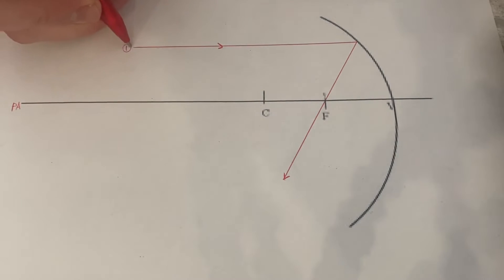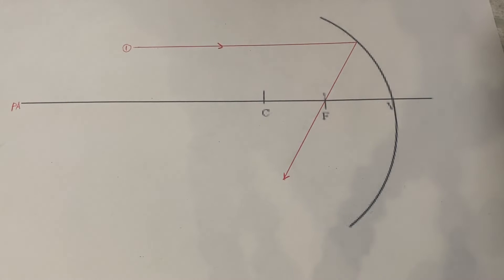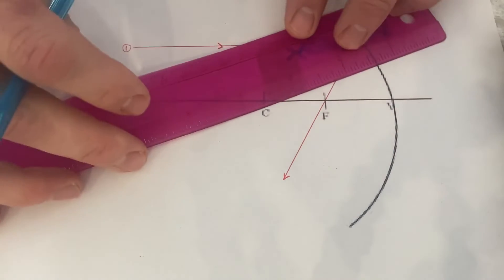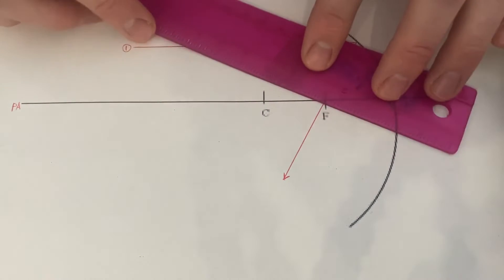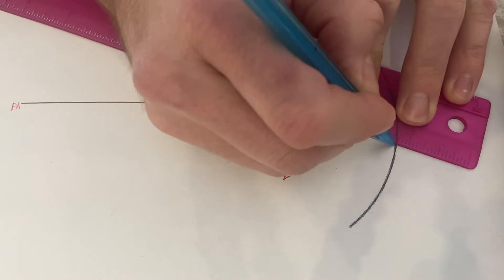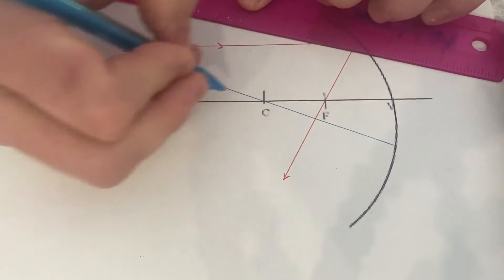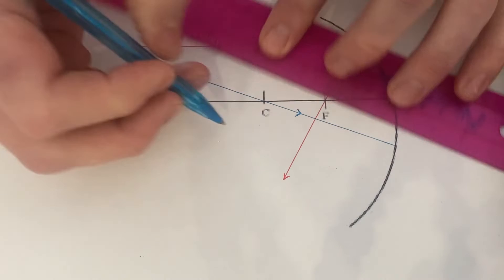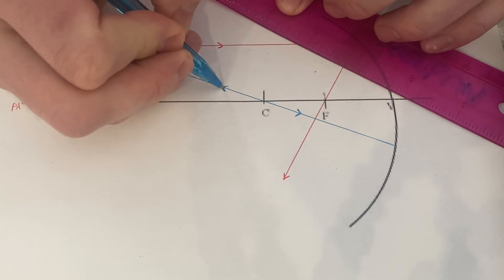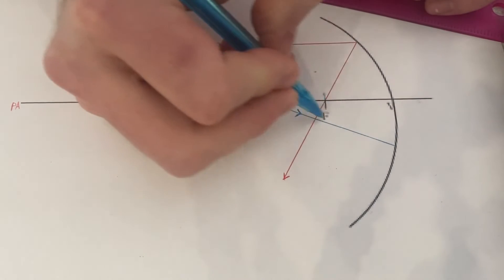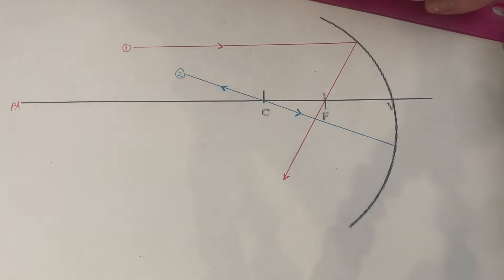Ray number two, drawn in blue: a ray passing through the center of curvature will reflect straight back. If I have a ray going through C and hitting the mirror, it doesn't matter what direction I point it — it's going to bounce straight back. So I start it from out here, bring it in to the mirror, and it goes straight back through to the center of curvature.